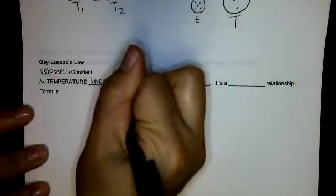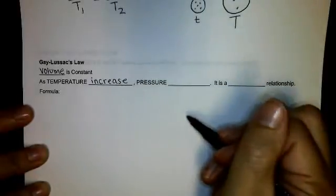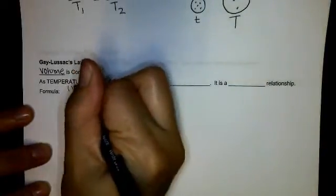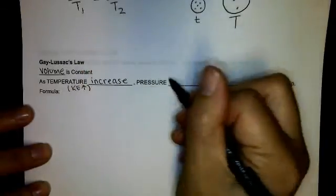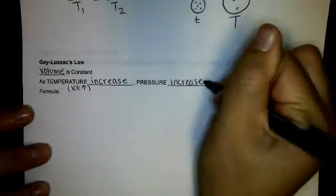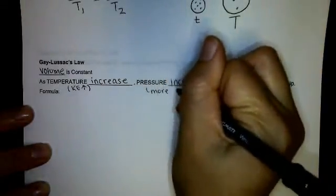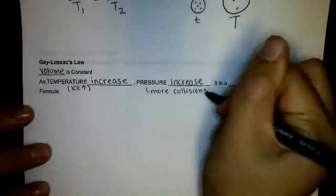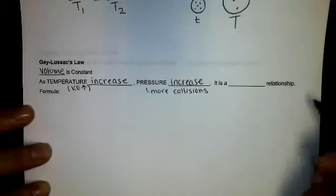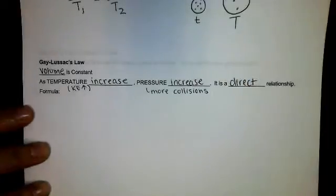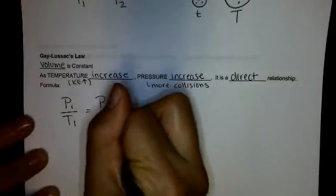Gay-Lussac's Law is the third basic law. Here, volume is constant — the container is rigid and can't change. As temperature increases, particles move faster, increasing kinetic energy, causing more collisions and therefore higher pressure. This is also a direct relationship. The formula is P1/T1 = P2/T2.